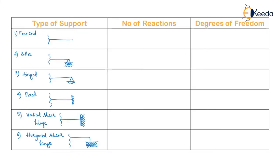Before the next lesson, let us review the types of supports — how many reactions each has and the degree of freedom. For a plane 2D structure, a joint can have horizontal displacement (translation), vertical displacement (translation), or rotation. A free end has no restrictions, so it has zero reactions and three degrees of freedom: horizontal displacement, vertical displacement, and rotation.